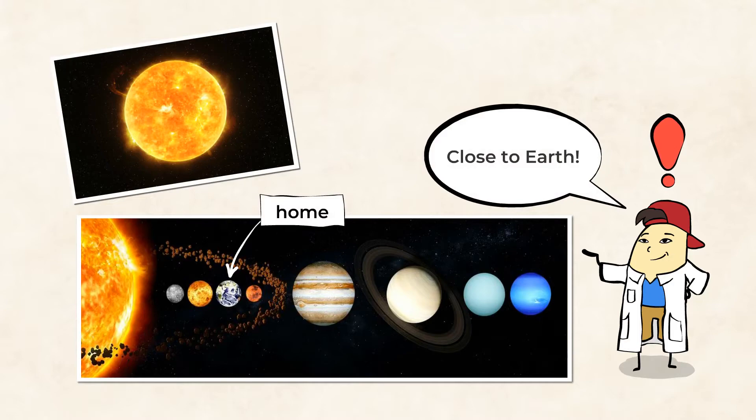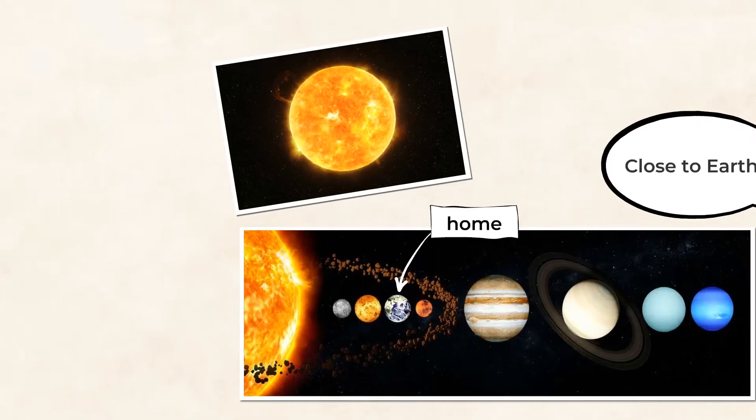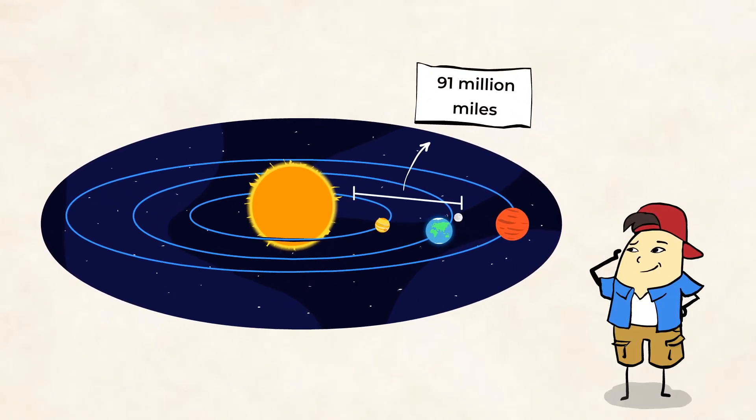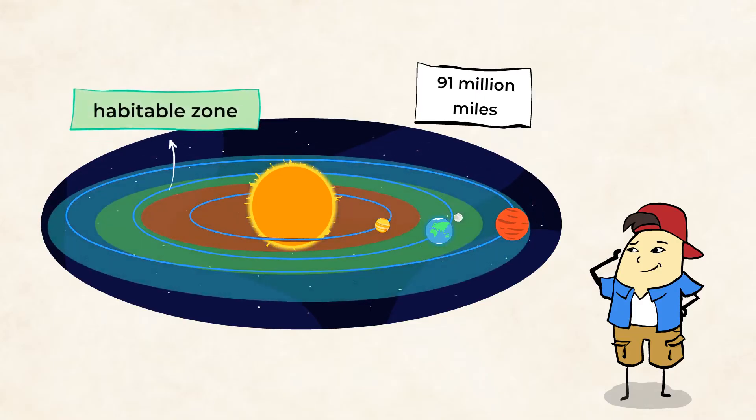And although it's the closest star to us, it's still pretty far away. Over 91 million miles away. Now, this distance is important. Because in order for our planet to sustain life, we need to be within the sun's habitable zone. The sun's what?